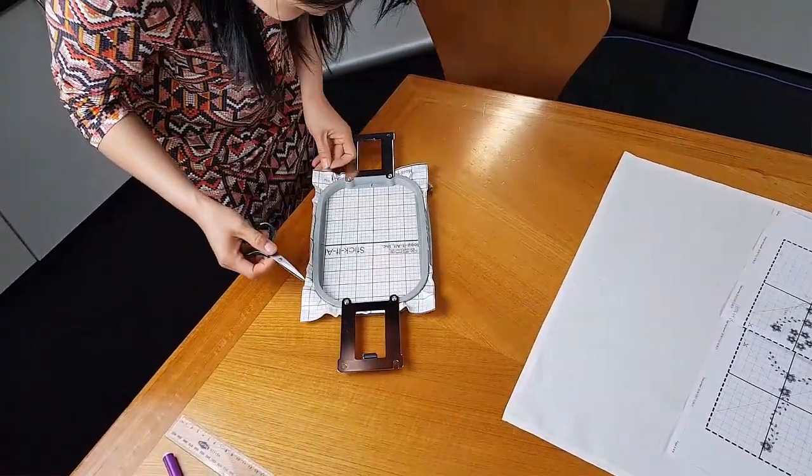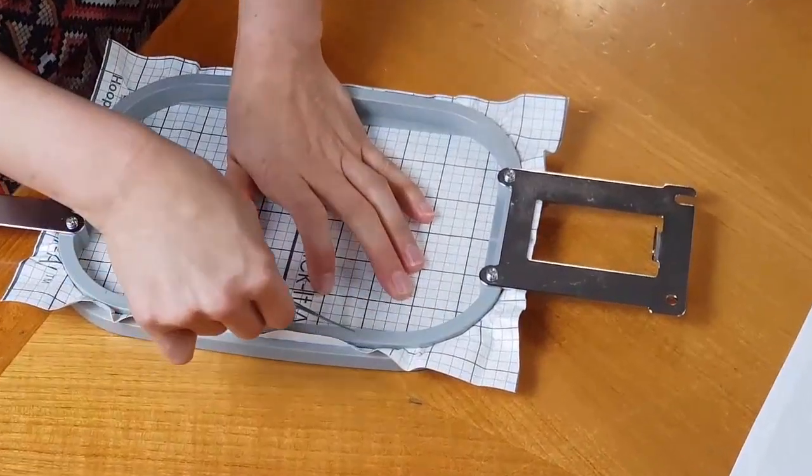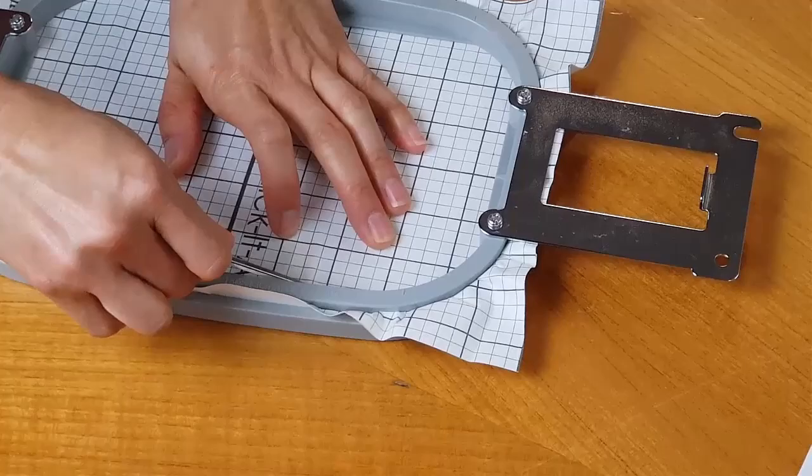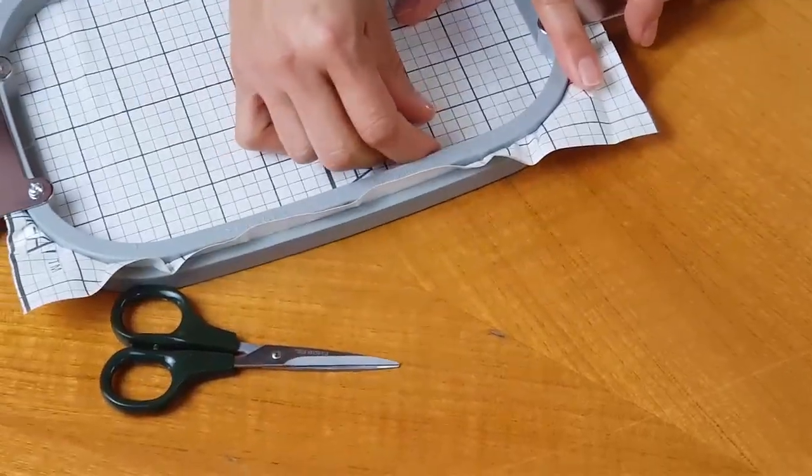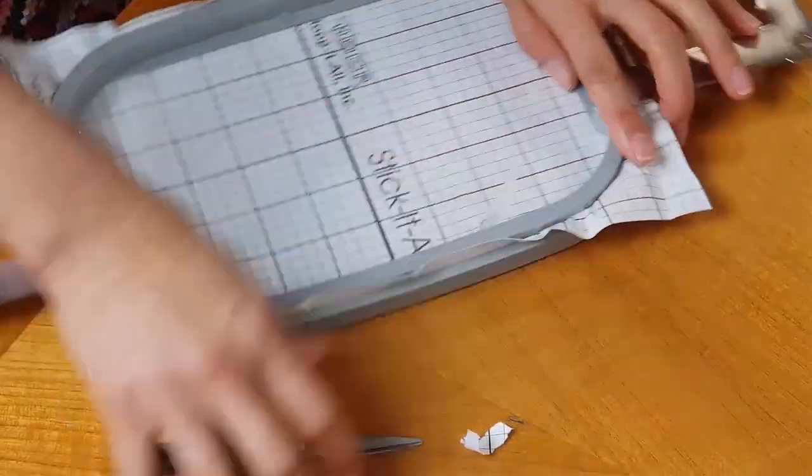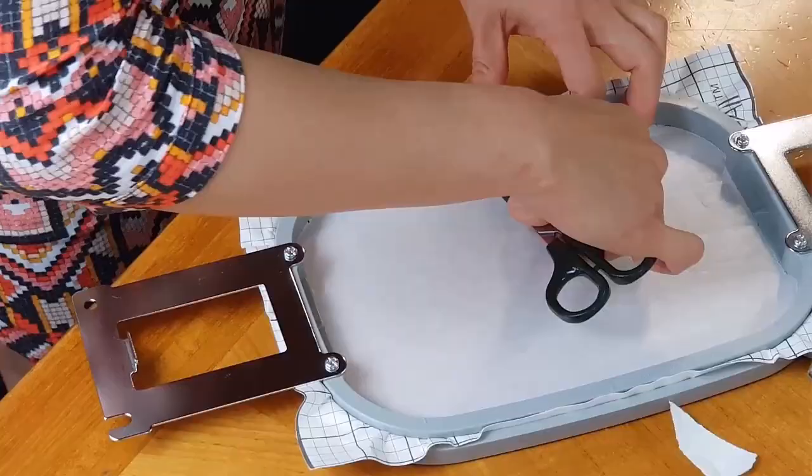Using a sharp implement, penetrate the paper and peel it away from the backing. Be careful not to penetrate the backing. Tear off the excess as close as possible to the hoop rim.